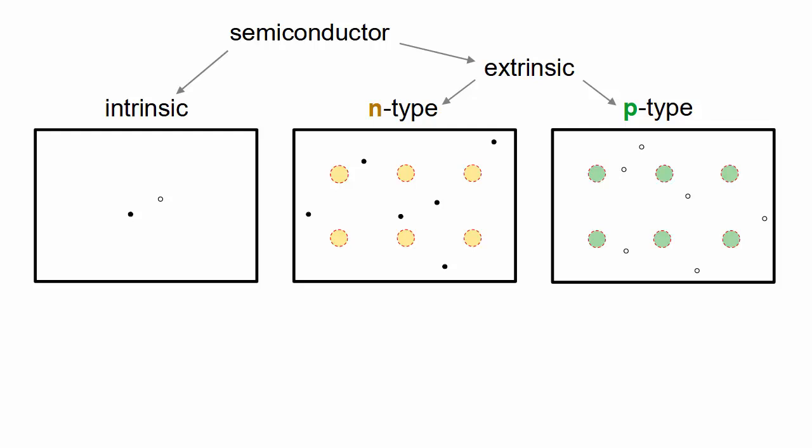Intrinsic means pure silicon, which has an equal number of mobile electrons and holes. Extrinsic N-type silicon has negative mobile charges, and extrinsic P-type silicon has positive mobile charges. The mobile charges are balanced by immobile atomic ions having the opposite charge.